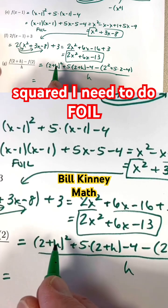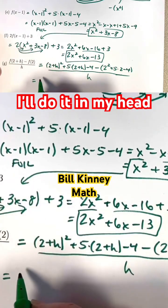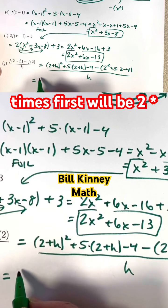And this 2 plus h quantity squared, I need to do FOIL just like I did up here. I'll do it in my head. First times first will be 2 times 2 is 4.